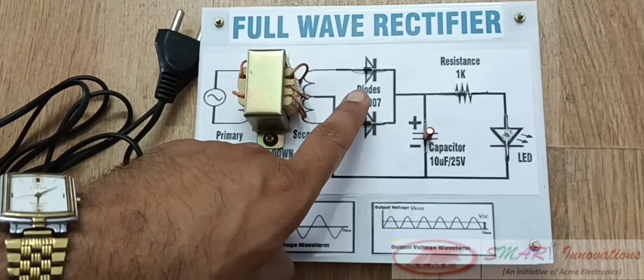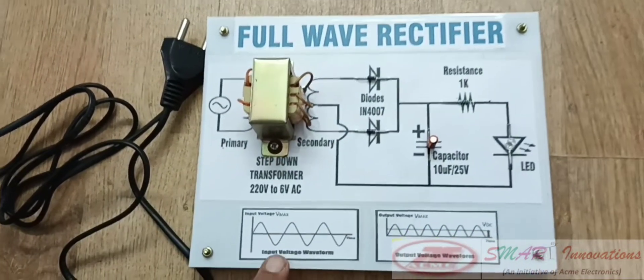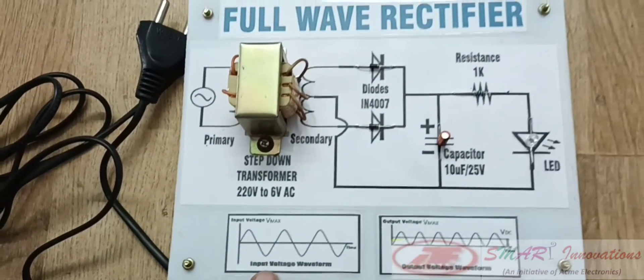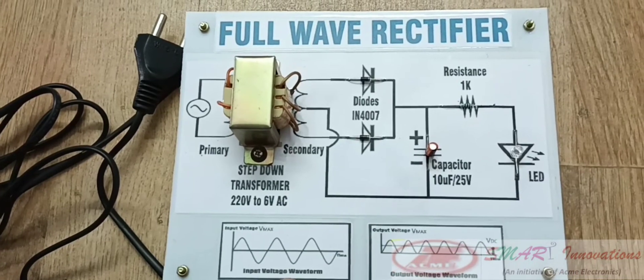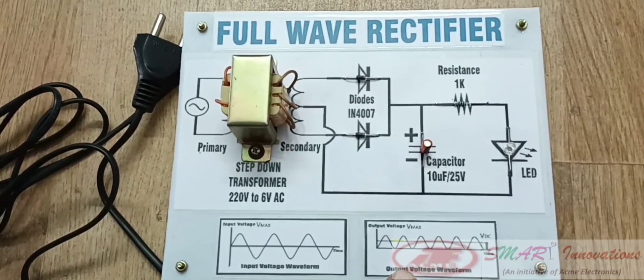So it becomes a full wave rectifier. The wave shapes are like this. This is the input voltage waveform, and this is the output voltage waveform.